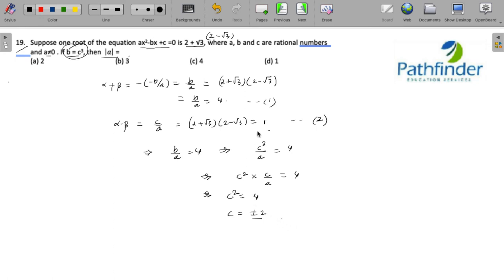So, since c is equal to plus minus 2, you can see here from 2 that c by a is equal to 1, which means c is also equal to a. So, if c is equal to plus minus 2, then a is also equal to plus minus 2. And therefore, mod of a, whether a is plus 2 or minus 2 will always be equal to 2, which is your answer.